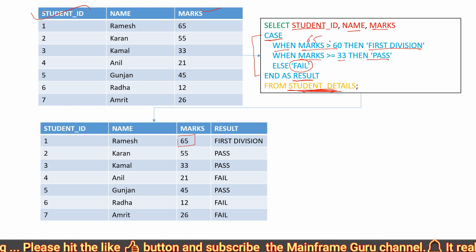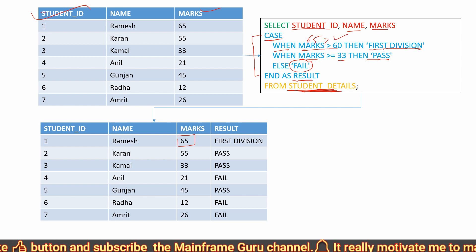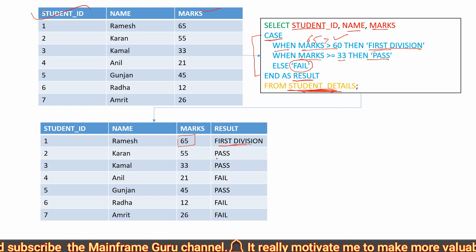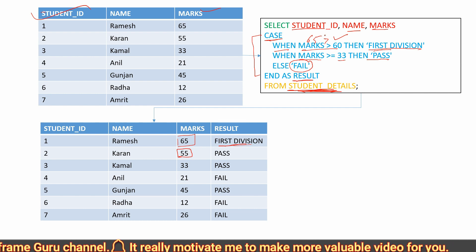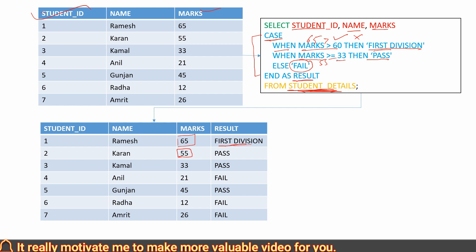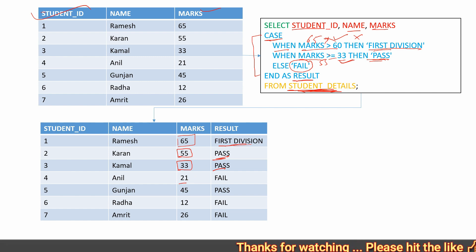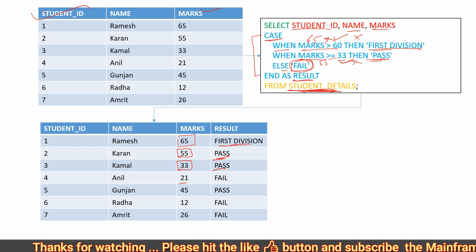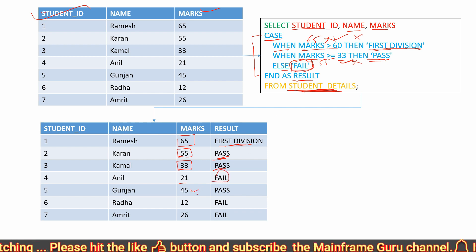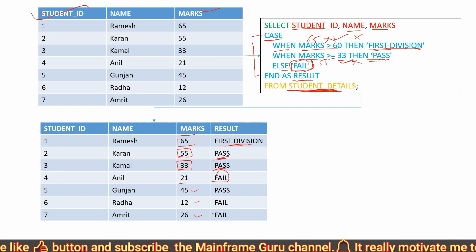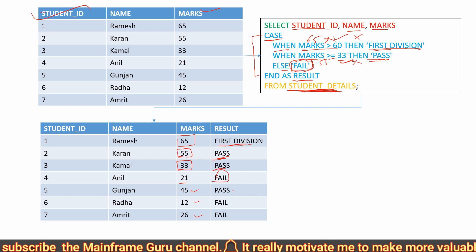For student ID 1 with 65 marks: 65 is greater than 60, so it prints 'First Division'. For 55 marks: 55 is not greater than 60, but 55 is greater than or equal to 33, so it prints 'Pass'. For 33 marks: 33 is not greater than 60, but 33 is greater than or equal to 33, so it prints 'Pass'. If none match, it goes to the ELSE part and prints 'Fail'. You can check all other marks like 45, 12, 26 similarly.